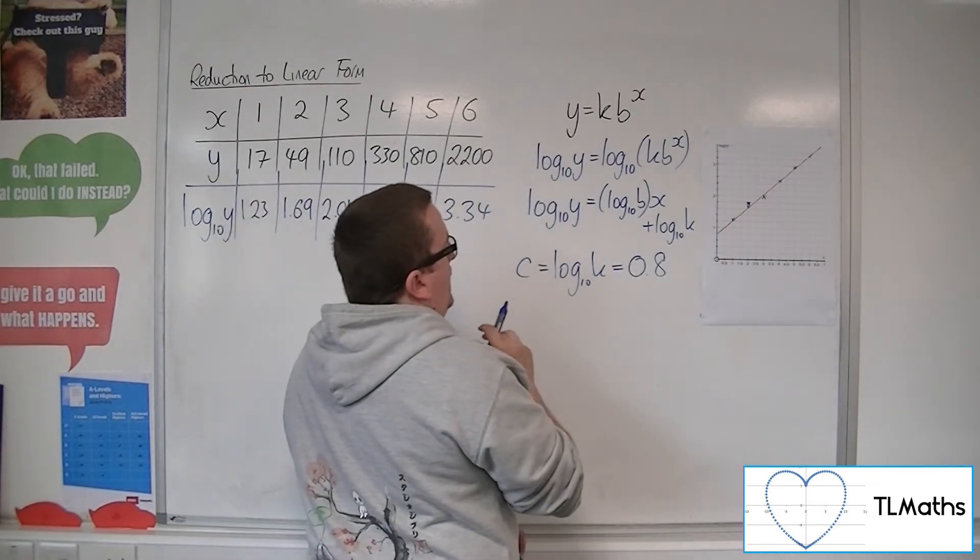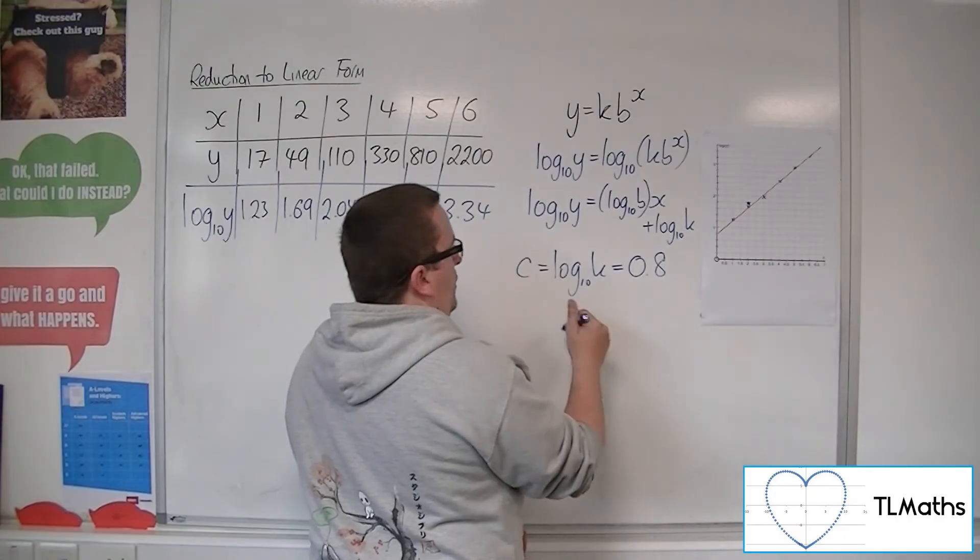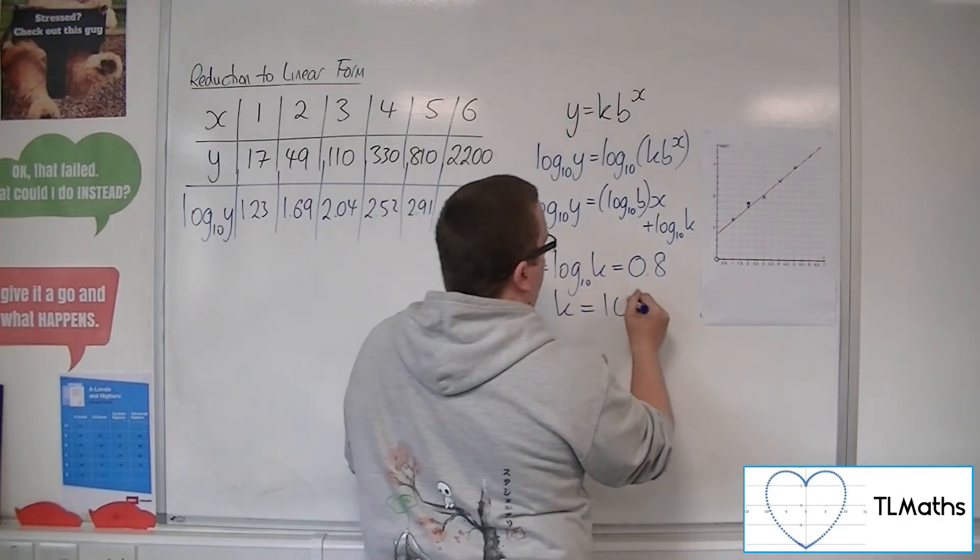So then, if log 10k is 0.8, then k is 10 to the 0.8.